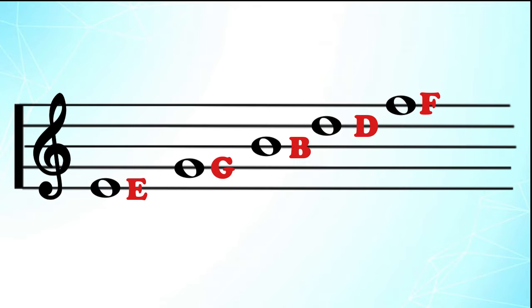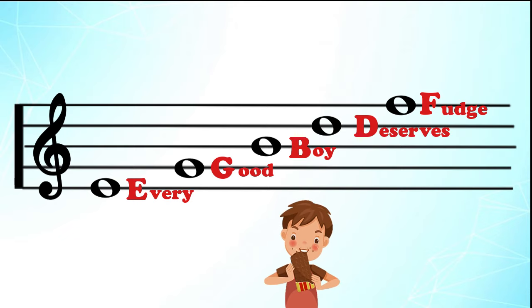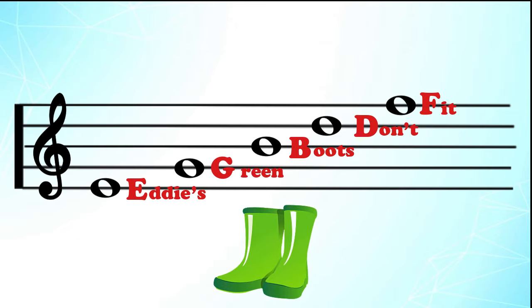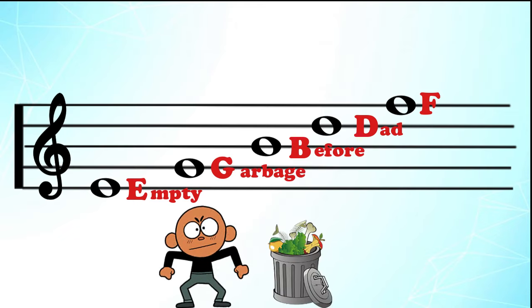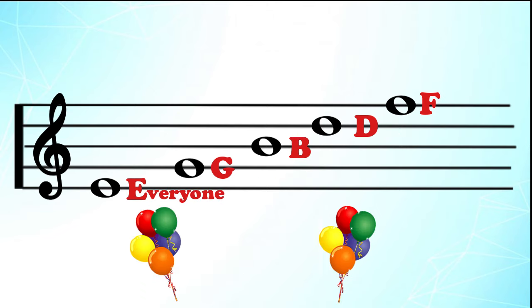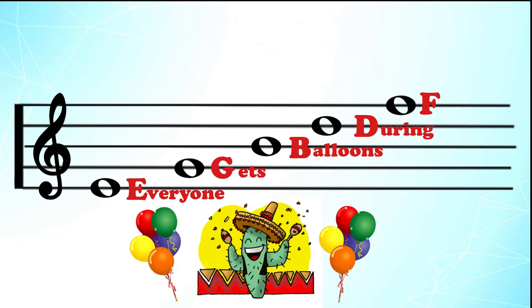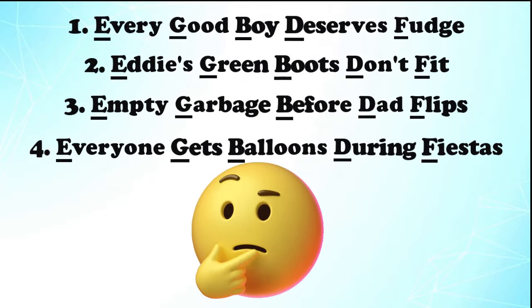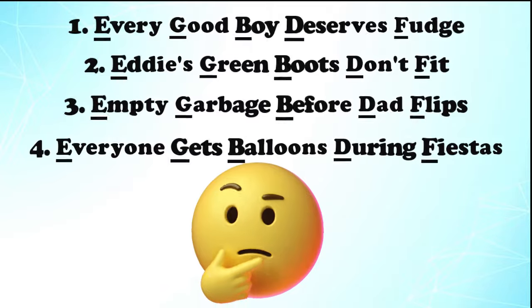A trick you can use to help you remember the names of the lines is assigning a word to each letter, such as, every good boy deserves fudge. Or you can choose to use something else, such as Eddie's green boots don't fit, or empty garbage before dad flips, or everyone gets balloons during fiestas. It doesn't matter which one of these sayings you pick to help you, as long as you remember it.